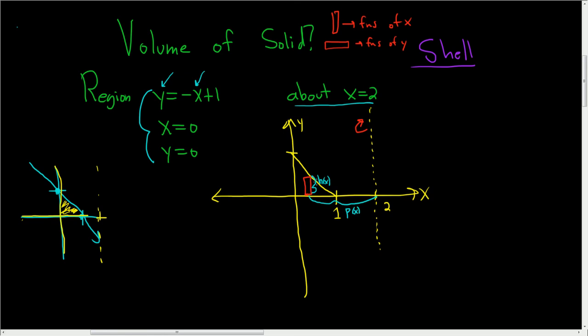Let's go ahead and write down h. We know that this is the line y equals negative x plus 1. So no matter where we draw our rectangle, that's going to be the height as a function of x. So little h of x is equal to negative x plus 1.